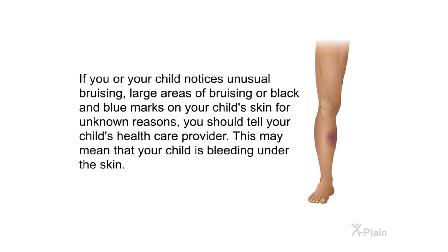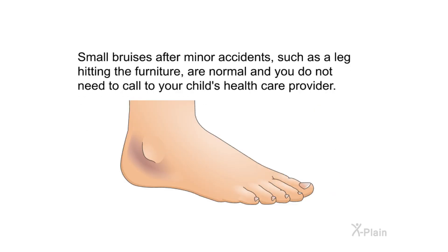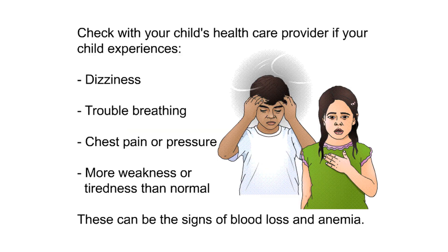If you or your child notices unusual bruising, large areas of bruising, or black and blue marks on your child's skin for unknown reasons, tell your child's health care provider — this may mean your child is bleeding under the skin. Small bruises after minor accidents such as a leg hitting furniture are normal and do not require a call. Check with your child's health care provider if your child experiences dizziness, trouble breathing, chest pain or pressure, or more weakness or tiredness than normal. These can be signs of blood loss and anemia.